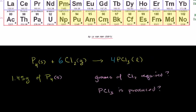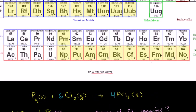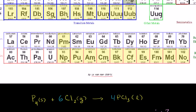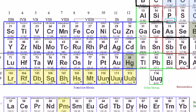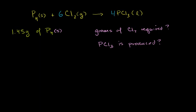Let's look at a periodic table. I have to give proper attribution to the maker — it's made by Levon Han Sedgric, from Wikimedia Creative Commons with an attribution license. Phosphorus right here has an atomic weight of 30.974. Let's just round that up to 31.